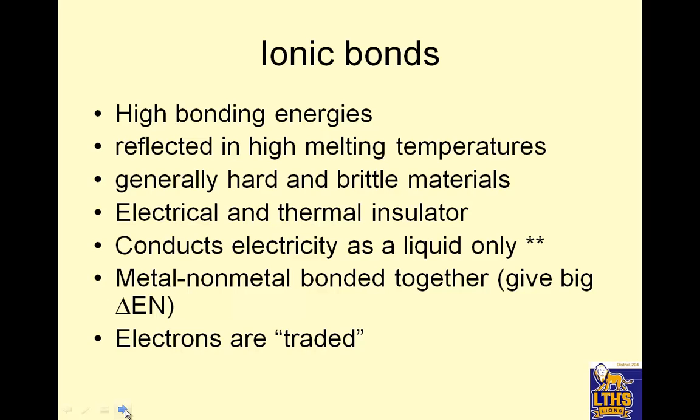Ionic bonds have really high bonding energies, so it takes a lot of energy to break them - strong. Reflected in high melting temperatures and boiling temperatures. They're generally hard and brittle because once you break that bond it can't adjust like a metal can. They're electrical and thermal insulators because they don't move. Electrical means you can move your ions and thermal means you can move your particles, but they're locked in place.